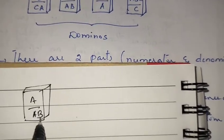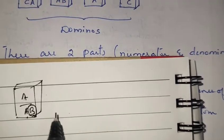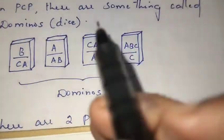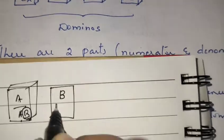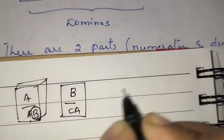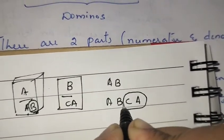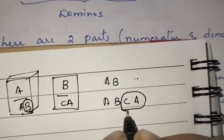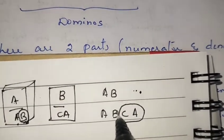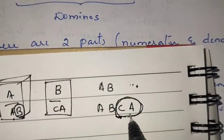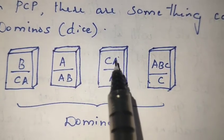Taking the first domino 'a/ab': now the denominator has an extra 'b', so I need to match 'ab' in the numerator. I can take the domino 'b/c'. Now the top gives 'ab' and the bottom gives 'abc'. There is an extra 'ca' in the denominator, so I need a domino with 'ca' in the top — which is the domino 'ca/a'.